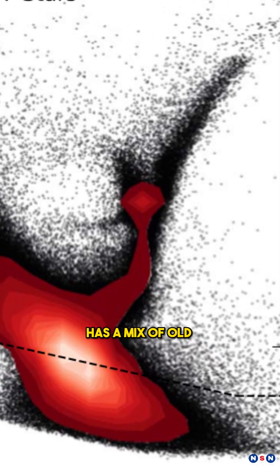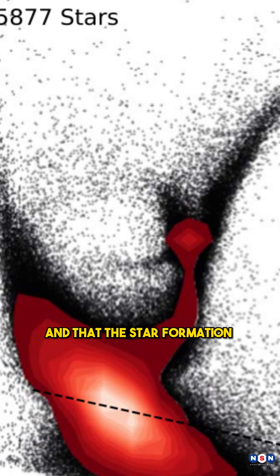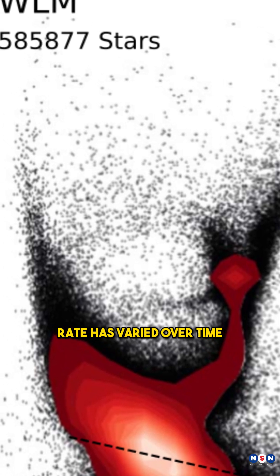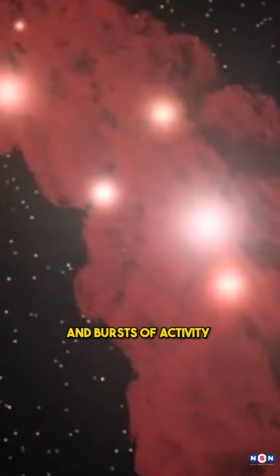The results showed that this galaxy has a mix of old and young stars, and that the star formation rate has varied over time, with periods of quiescence and bursts of activity.